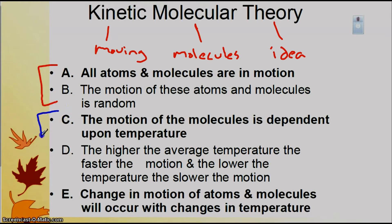For this goal, we're going to look at these three parts. The motion of the molecules is dependent upon temperature. That's a really important part of this goal. Second part, the higher the average temperature, the faster the motion, and the lower the temperature, the slower the motion. So we have to concentrate on speed of motion here, but we also have to concentrate on how loosely those molecules are moving together and how easily they're flowing over each other.